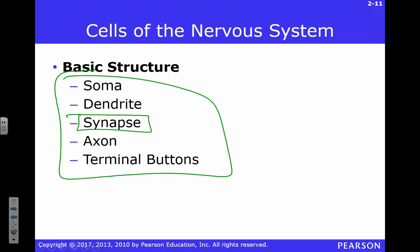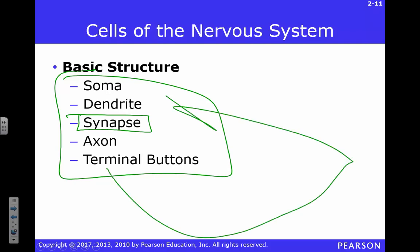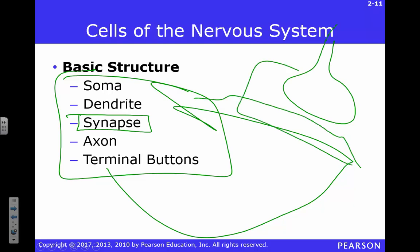We didn't talk about a synapse yet. When a terminal attaches onto something else, this area is called a synapse. This little gap down here is the synaptic cleft. We'll talk in detail about that in a minute.